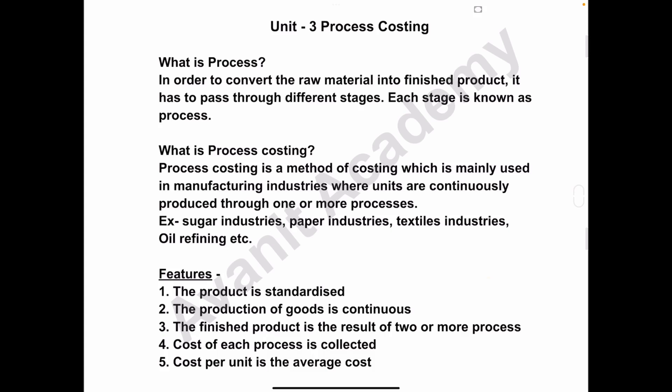Hello students, welcome to my channel. Today we will start process costing. First we'll understand the meaning of process. To get the final product, the raw material has to be passed through different stages, and each stage is called a process. We'll take the example of the sugar industry. The final product is sugar.